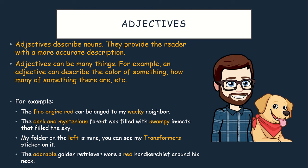Adjectives are words that describe nouns. They provide the reader with a more accurate description. Adjectives can be many things — for example, an adjective can describe the color of something, how many something are, or even where something is. Let's look at an example: 'The fire engine red car belonged to my wacky neighbor.' Fire engine red describes the noun car, so fire engine red is an adjective. Wacky describes the neighbor, and neighbor is a noun, so wacky is an adjective.